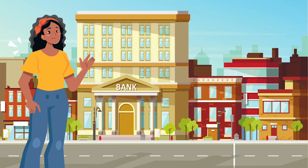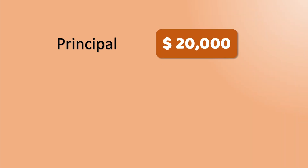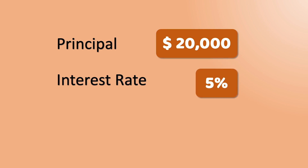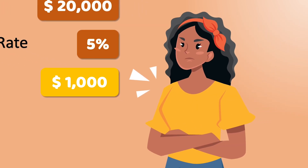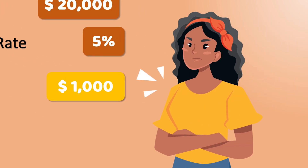For example, let's say you make a deposit of twenty thousand dollars into a savings account that only offers simple interest at an annual rate of five percent. After one year, your return on investment will be one thousand dollars. Since simple interest is earned only on your initial deposit, your annual return will always be just one thousand dollars every year.